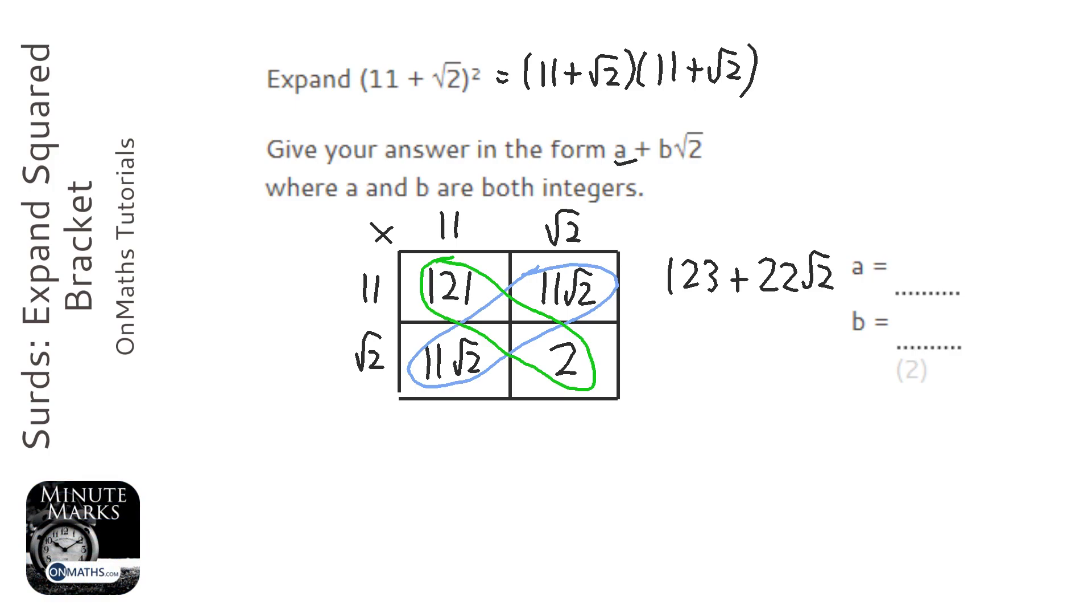So our a value is 123, and our b value is 22.